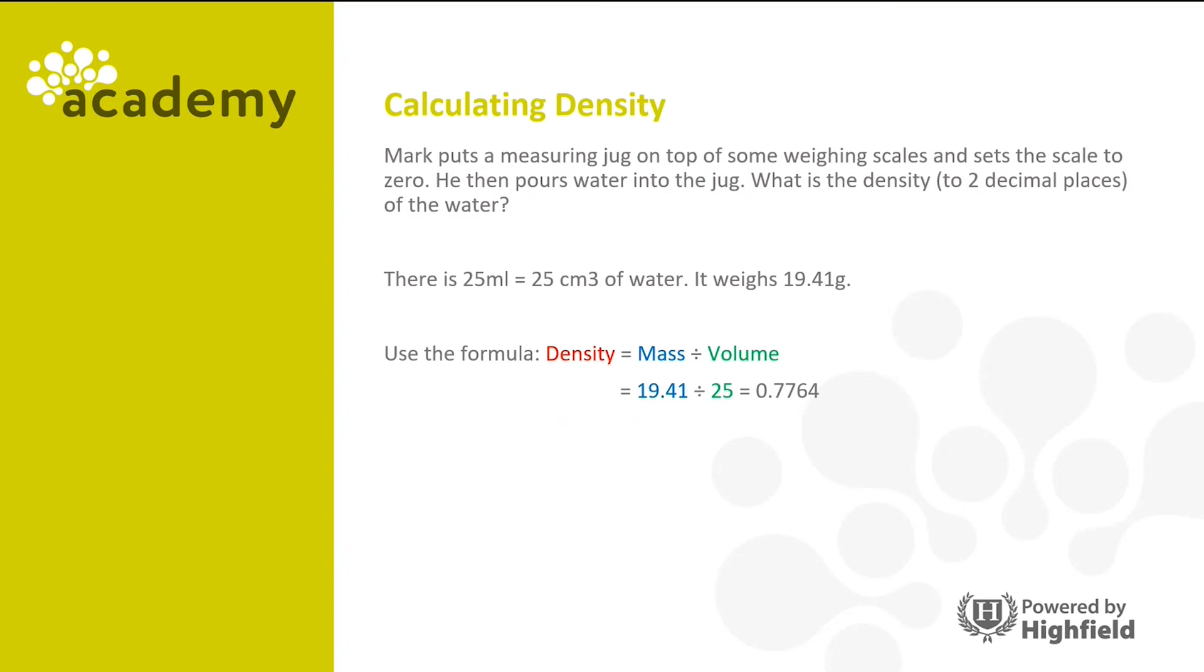So 19.41 divided by 25 equals 0.7764, or 0.78 grams per cubic centimeter. Now you need to note here that if the volume provided is in cubic centimeters, always check whether the answer is required in cubic centimeters or cubic meters and make sure you do it correctly.